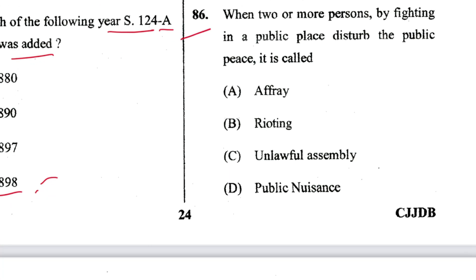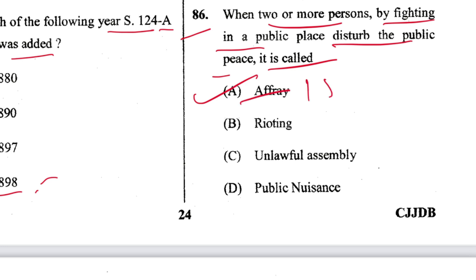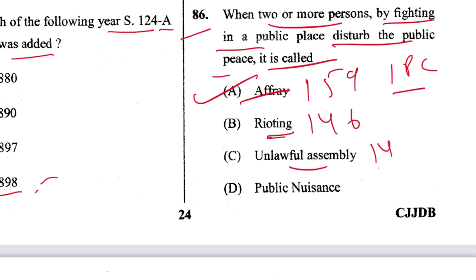Question 86: When two or more persons by fighting in a public place disturb the public peace, it is called affray, defined in Section 159 of IPC. A is the answer. Rioting is Section 146; unlawful assembly is Section 149; public nuisance is Section 268.